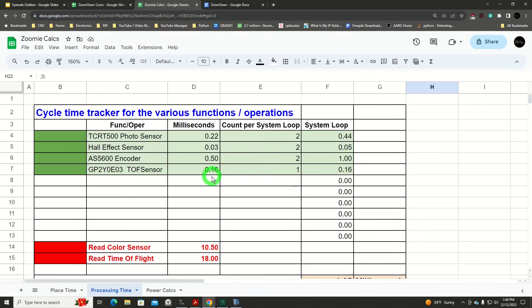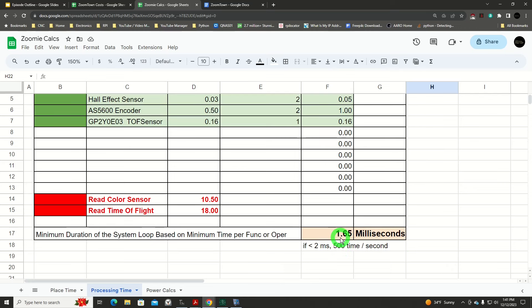Now there's multiple sensors in some applications here. The first three, we've got two of each. And then finally, the time of flight sensor just one. So we work out how much time all those sensors take to be read and processed. And it works out to 1.65 milliseconds.